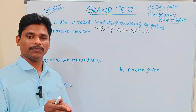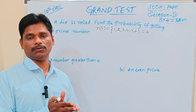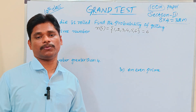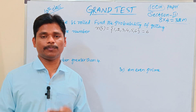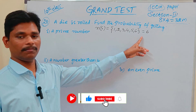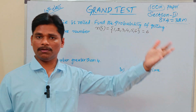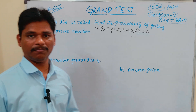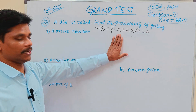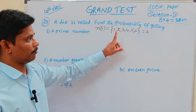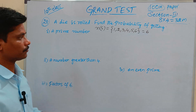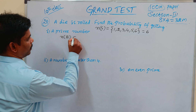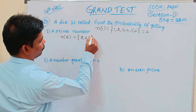The probability of getting an event is equal to the number of favorable outcomes by total number of possible outcomes. That is the formula. Here, the total number of possible outcomes is 6. We have 4 questions. First question: what is the prime number? In the sample space, we check the prime numbers: 2, 3, 5. So N of event for prime numbers is 2, 3, 5 — that is 3.